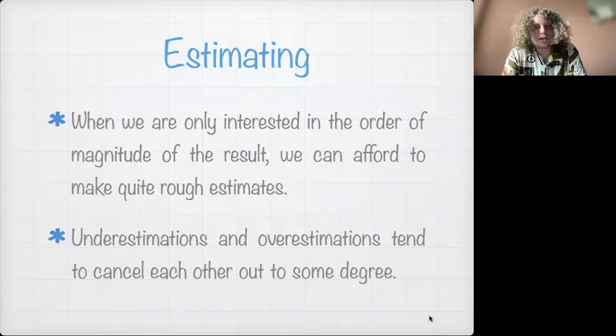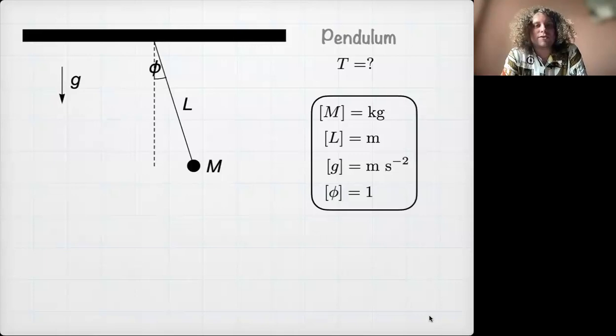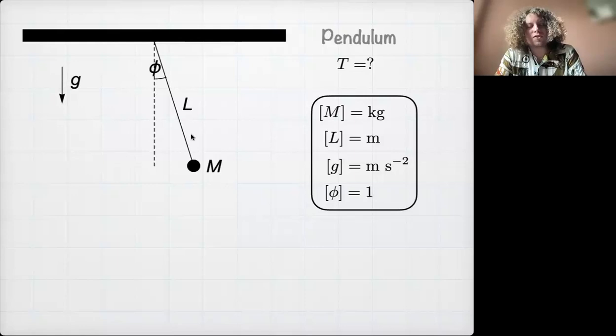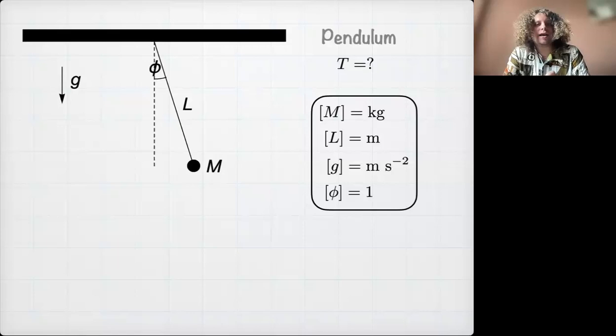When you're only interested in the order of magnitude, you can afford rough estimations because underestimates and overestimates tend to cancel each other out to some degree. Now let's talk about dimensional analysis — how to solve physical problems without knowing much about the physics. The most popular illustration is the mathematical pendulum: a point mass on a rope. We are interested in the period of oscillation. One can write Newton's law equations and derive the formula, but the formula can almost be guessed.